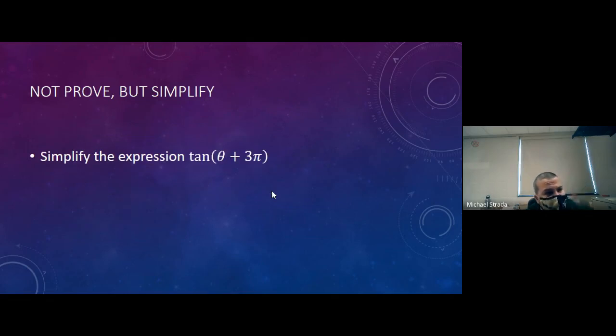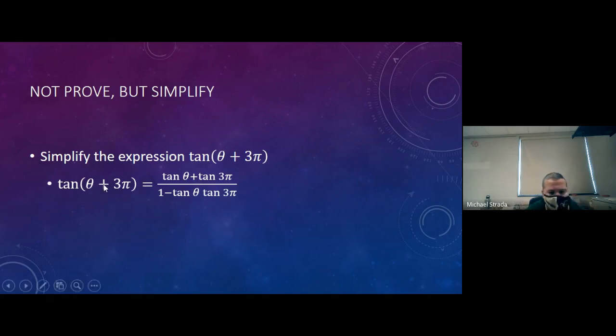And then, simplifying the expression tangent of θ plus 3π. You have to remember that the sum of tangents is the sum of their individual tangents over 1 minus the product of their tangents. If instead of a plus this was a minus, then the minus would be up there and the plus would be down there.